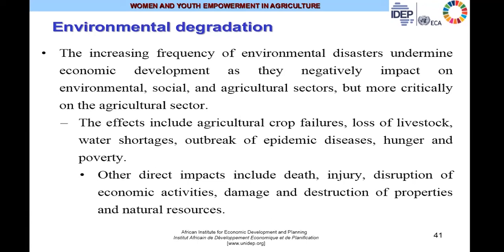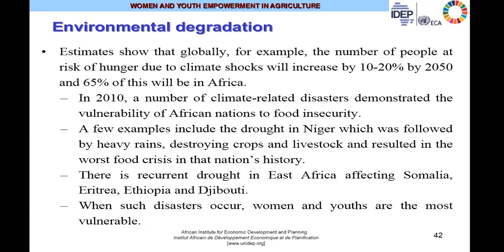The effects of environmental disasters include agricultural crop failures, loss of livestock, water shortages, outbreak of epidemic diseases, hunger and poverty, death, injury to humans, destruction of property, and disruption of economic activities. Globally, the number of people at risk of hunger due to climate shocks will increase to between 10 and 20% by 2050, and 65% of these will be in Africa. In 2010, climate-related disasters demonstrated the vulnerability of African nations to food insecurity, including a drought in Nigeria followed by heavy rains destroying crops and livestock.